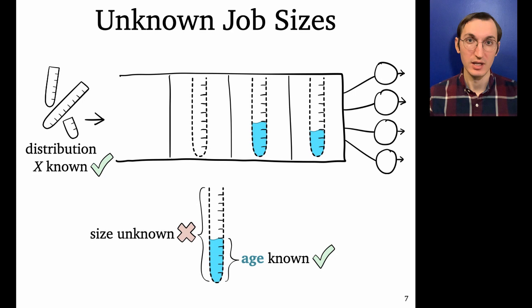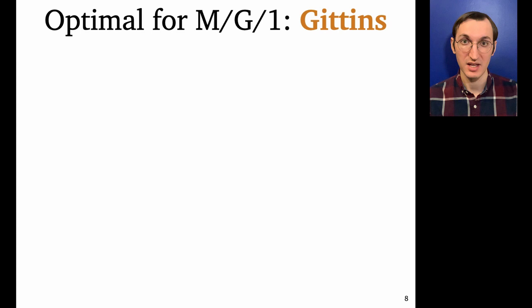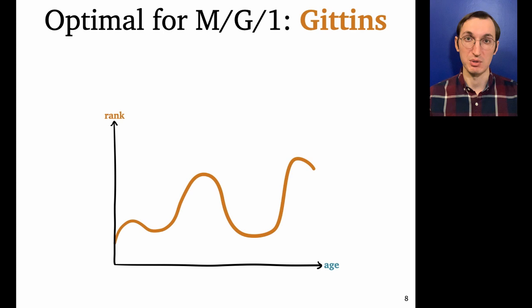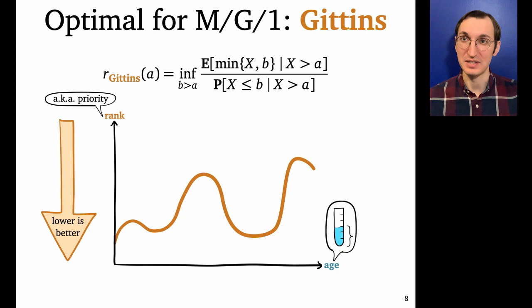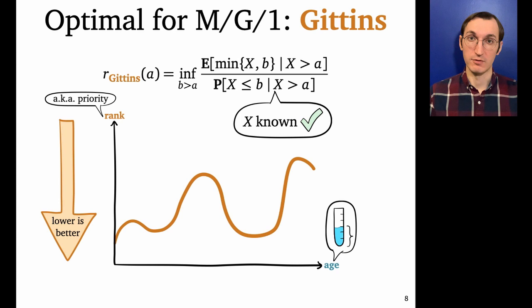So it turns out that in the M/G/1, it's known how to do this optimally to minimize mean response time using a policy called Gittins. So the Gittins policy works like this. It uses what's called a rank function to assign each job a priority or rank based on its age, the amount of service it's received so far. And we're going to use the convention that lower rank is better. So here's the rank function of Gittins. It's a kind of complicated formula, but what you need to see is that it uses the job size distribution.